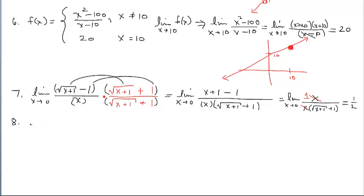Let's practice a few more. You might be looking at this next problem thinking we just did that with the dividing out technique — we sure did. Now you have a choice on this problem. I prefer to just factor the denominator into the sum and difference of like terms, but if you forget that and you see the square root, you might automatically think to use the rationalizing technique — it works too. The answer was previously 1 sixth, so we should get the same answer using a different strategy. First, let's plug in 9 and verify that we get indeterminate — yes, we do.